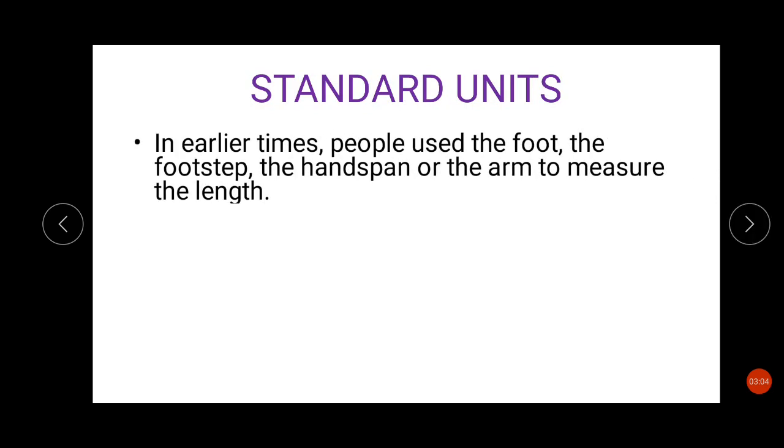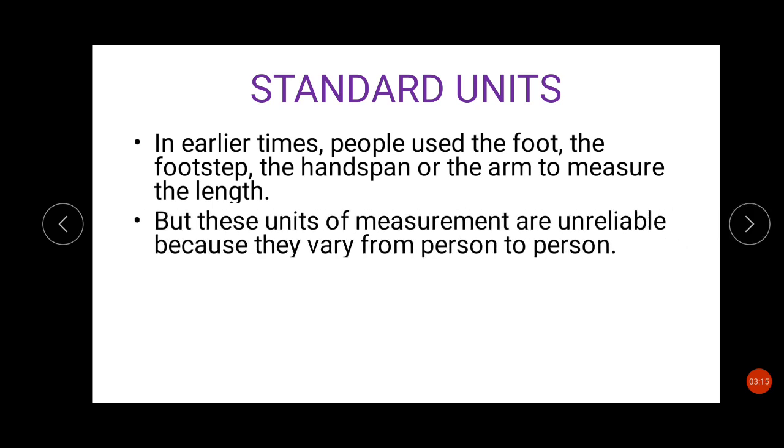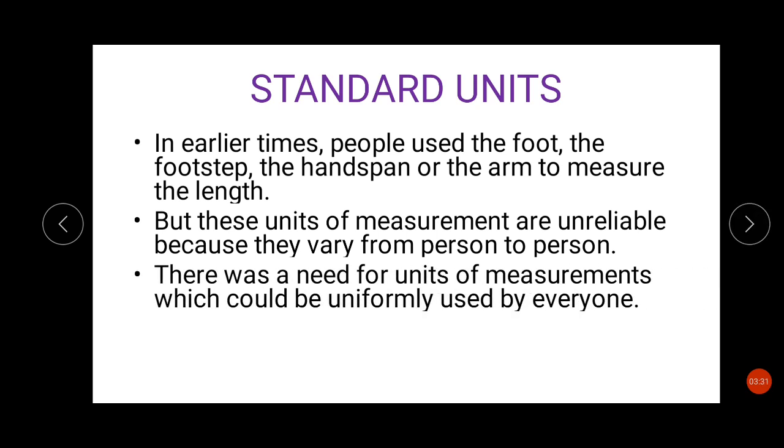In earlier times when we didn't have any devices, we used to measure with the help of foot, footstep, hand span, or even arms. But the limitations of these devices is they are unreliable because they change from person to person. So we cannot depend on these devices. If we call foot as a device or hand span as a device, you cannot depend on it because it differs from person to person.